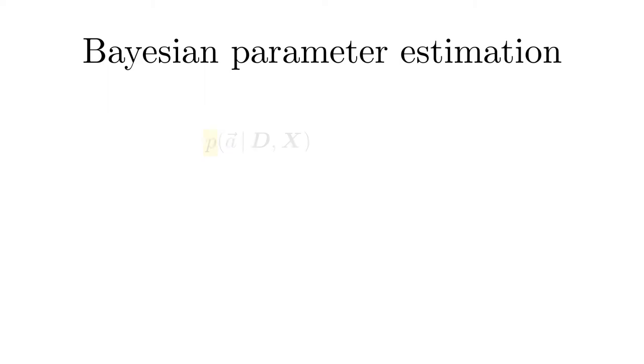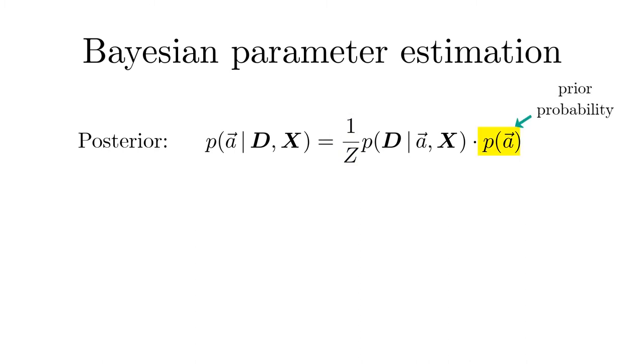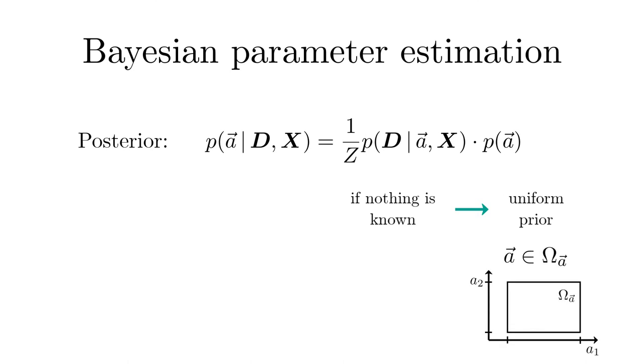The probability density for the parameters in the light of the measured data is the posterior probability that can be simplified by Bayes' theorem. The normalization is independent of the parameters and can be determined in the end. The prior probability encodes our knowledge about the parameters before we take into account the experimental data. If nothing is known at all, the most ignorant prior is the uniform prior, maybe within certain parameter ranges.